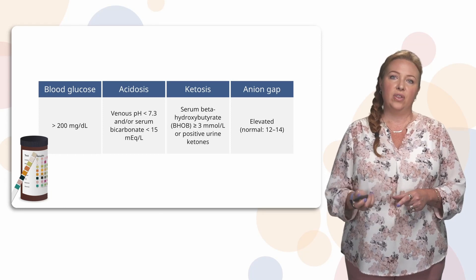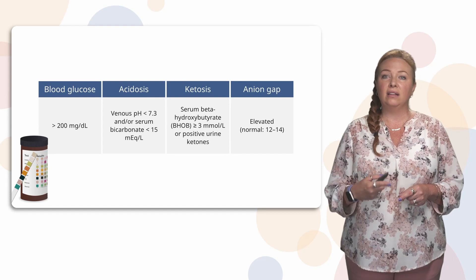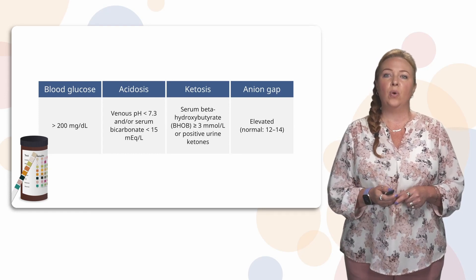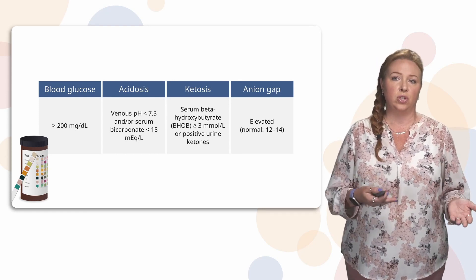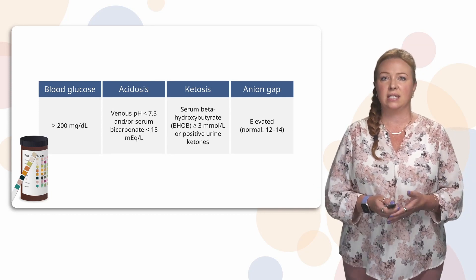And then one of the other things that you look at is the anion gap. So there's going to be an elevation in the anion gap. A normal gap is between 12 and 14. So if it's higher than that, then you have to suspect DKA.